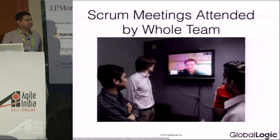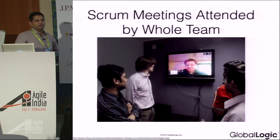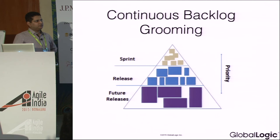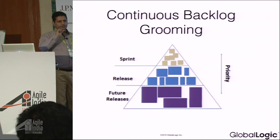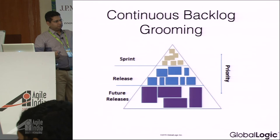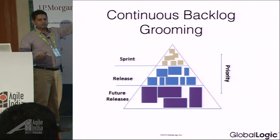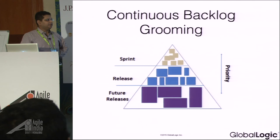Scrum meetings must be attended by the whole team — otherwise it's not going to work. Continuous backlog grooming is also taken from the previous points. As an epic comes in, it comes as a rock. You start drilling down and slicing it, and as it moves toward the sprint, it becomes smaller stories. This is a kind of backlog grooming iceberg — as it moves up, it becomes smaller and smaller. Backlog grooming is a very important thing in order to work in the distributed fashion and in opposite time zones.